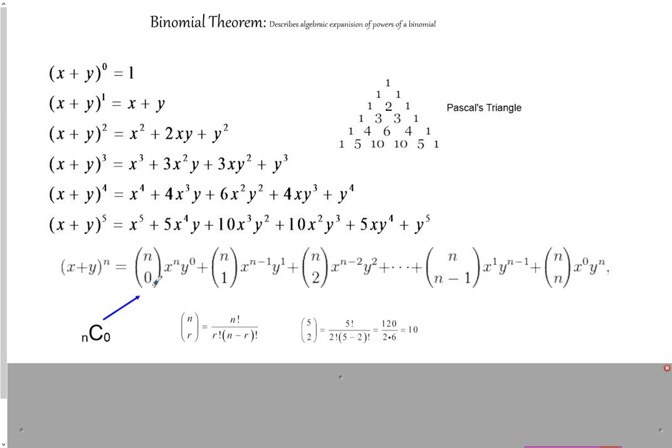So this refers to nC0. Sometimes we write it like this. You probably have seen this when you learn the probabilities, when you deal with combinations problems. Which means I have n objects. And I'm going to choose 0 from the n objects. And the order does not matter.